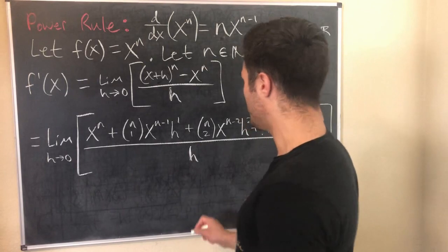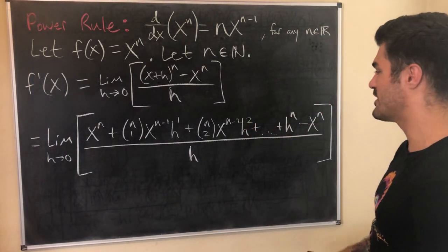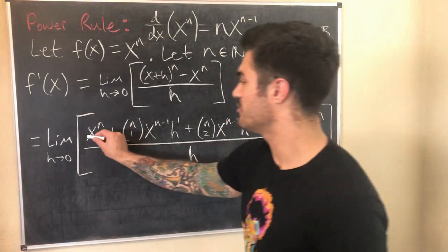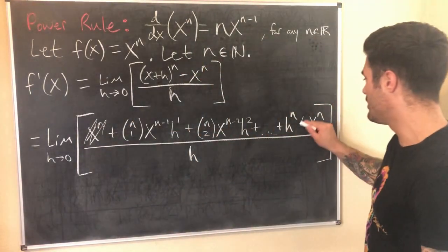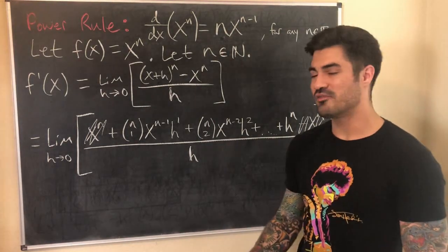So this looks insane, and you may be thinking, why would you ever do this? How does this help? But just watch, it's pretty amazing how this works out. So first of all, we have x^n minus x^n. We can get rid of those right away. x^n is gone with minus x^n, clear cancellation.